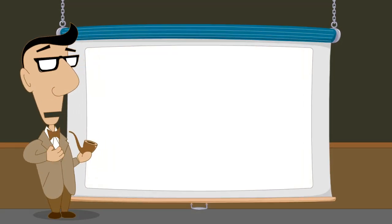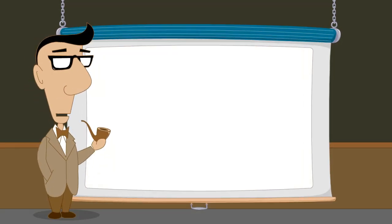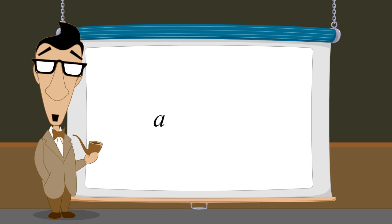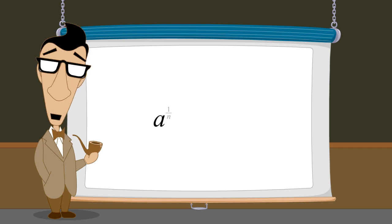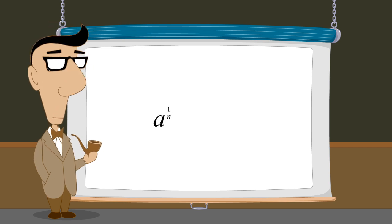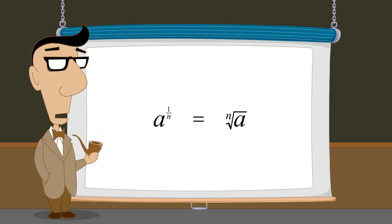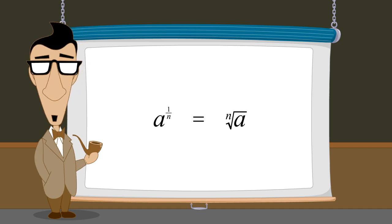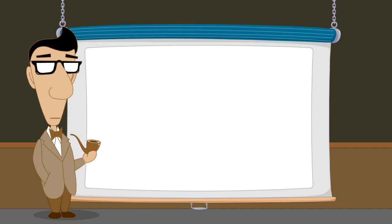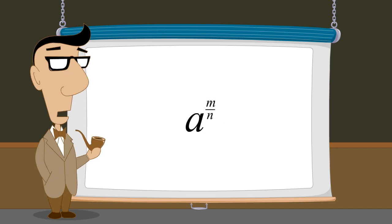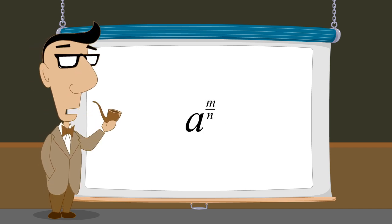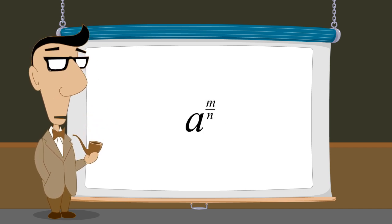So far we have seen that writing any number a with an exponent one over n represents the nth root of that number. In the next lecture, we will see that exponents can not only be unit fractions, they can also be rational numbers written as common fractions, m over n.